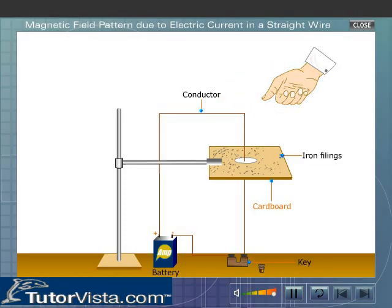Now gently tap the cardboard. Do you observe any change in the arrangement of iron filings? The iron filings do not show any change in their arrangement because no current is flowing through the conductor. Now switch on the current.